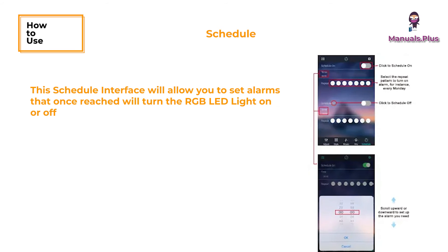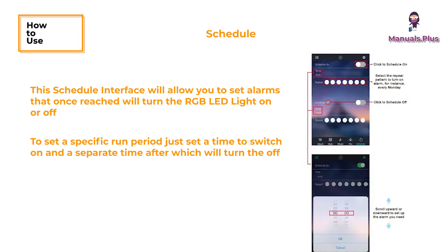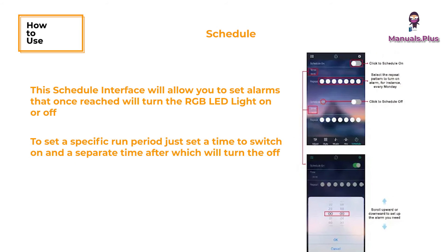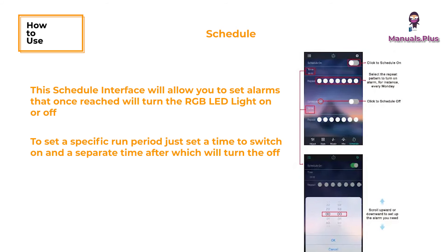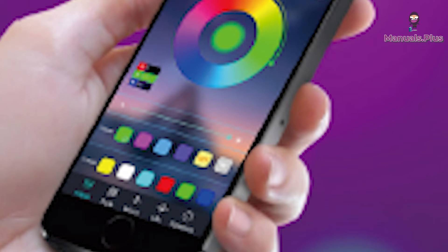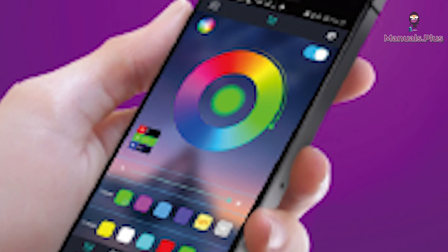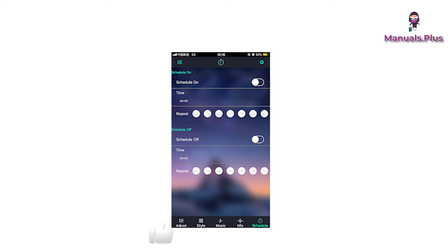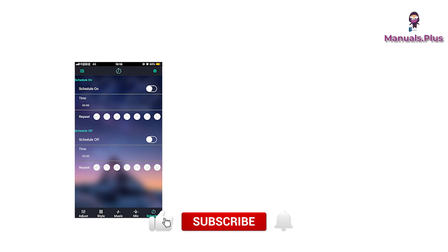The Schedule interface allows you to set alarms that will turn the RGB LED light on or off once reached. To set a specific run period, set a time to switch on and a separate time after which it will turn off.